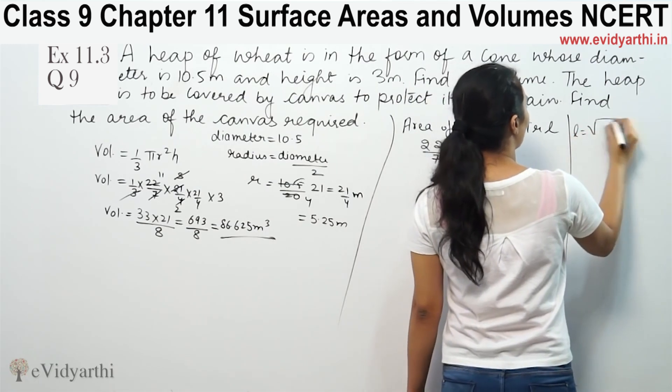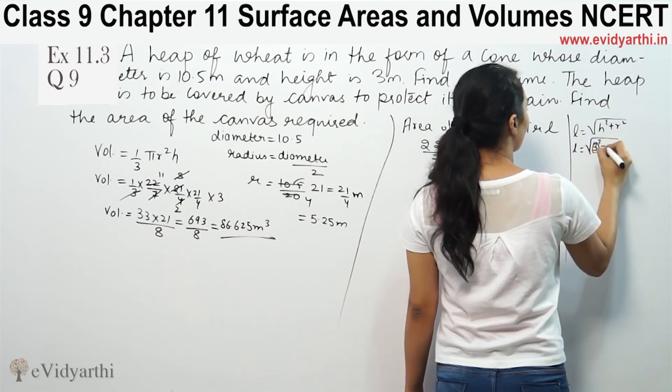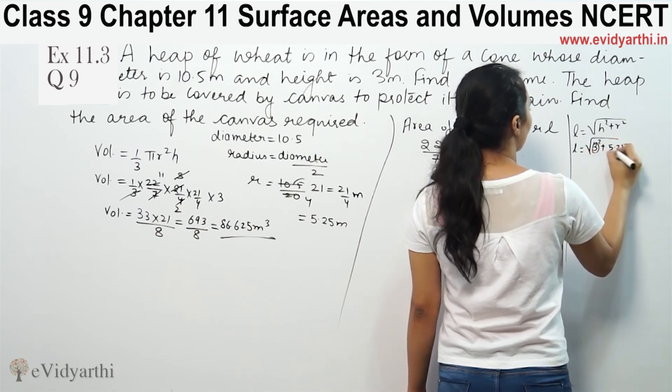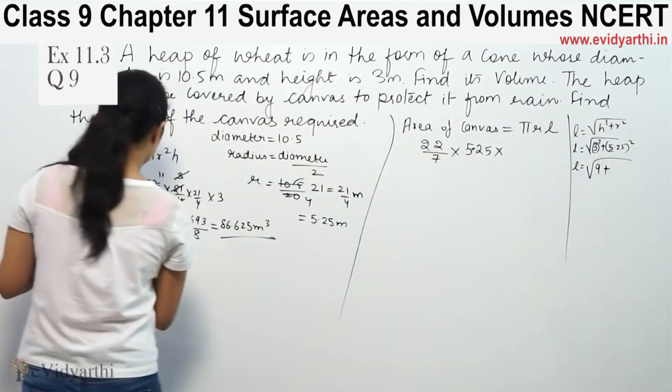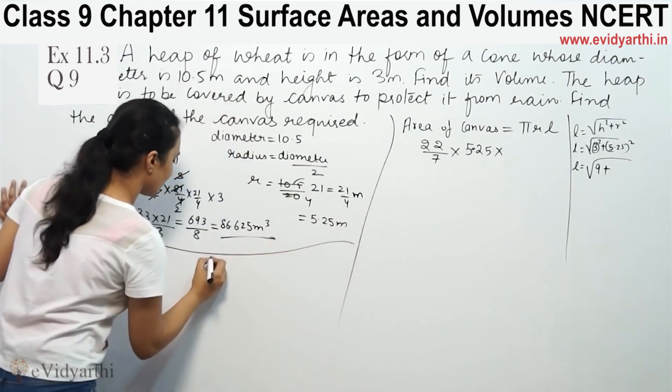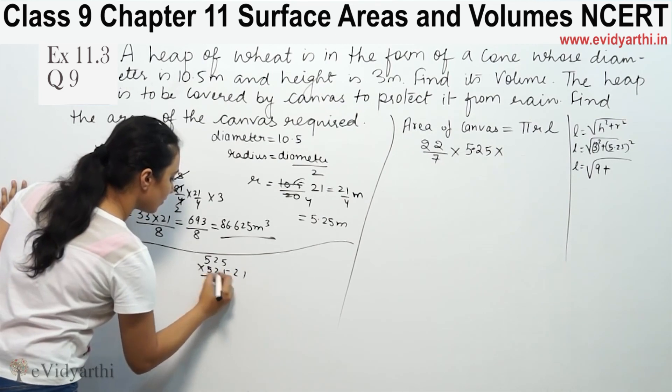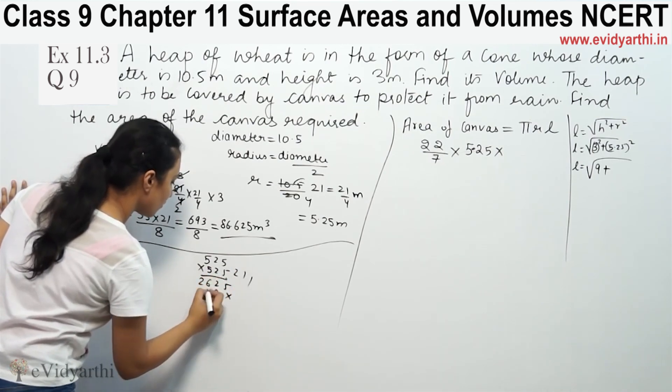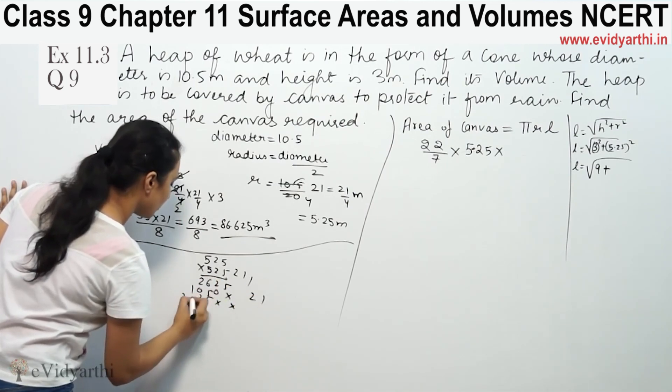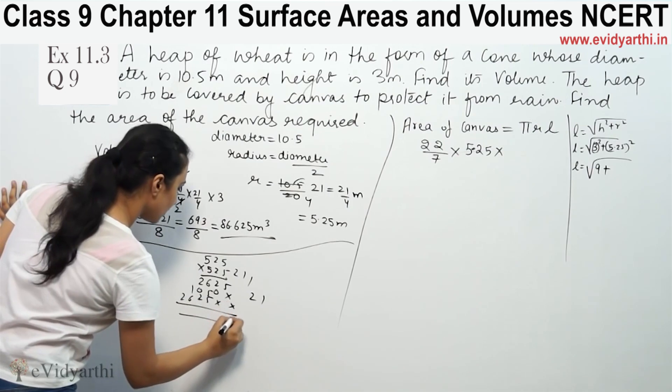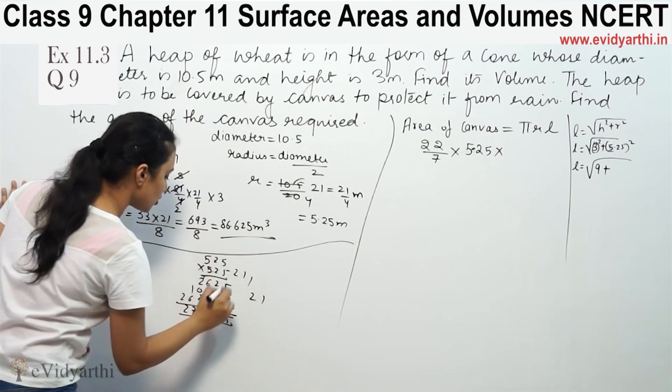L will be equal to the square root of h² plus r². So L equals square root of 3² plus 5.25². L is the square root of 9 plus 27.5625, which equals the square root of 36.5625.